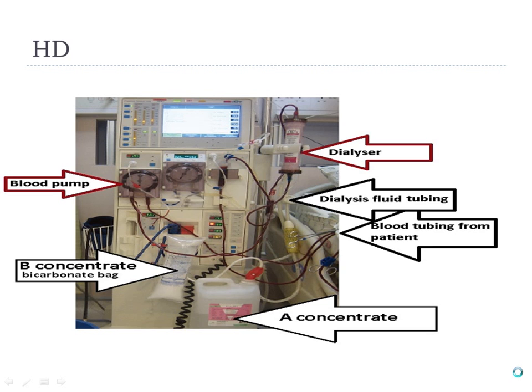The blood actually goes through the machine. There is a port somewhere in the tubing where you can hook infusions. An IV pole on the machine lets you hang blood, and you attach it somewhere in the tubing so the blood you're giving gets dialyzed — that fluid will be pulled off during the session.